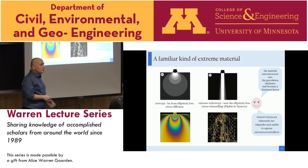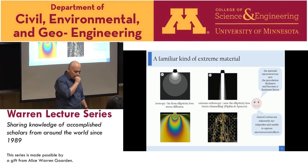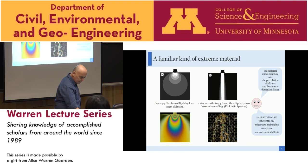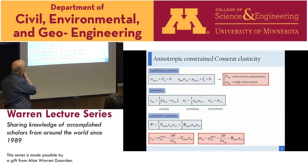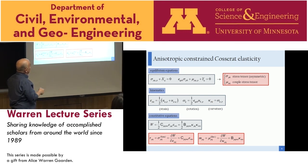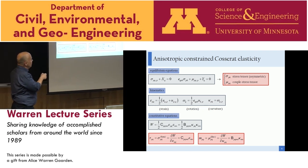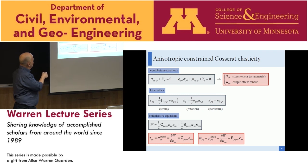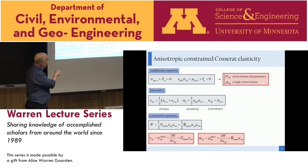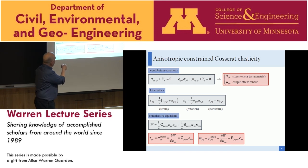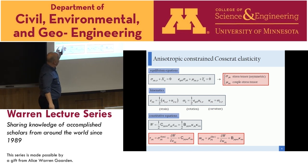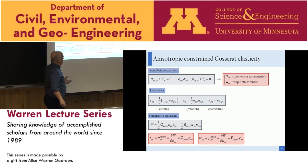One way to introduce microstructural effects in a continuum is through gradient-dependent materials. The simplest material with an internal length is the constrained Cosserat elastic solid. The governing equations are the equilibrium equations. In couple-stress Cosserat elasticity, there is a balance of couple stresses. The kinematics include strain, rotation, and curvature. The interesting thing is that curvature enters the elastic energy: the elastic energy is the sum of the classical part plus a term representing the curvature of the material.